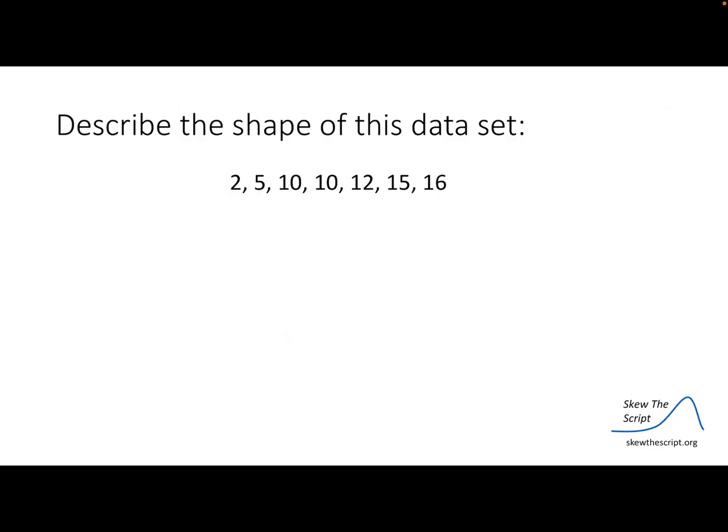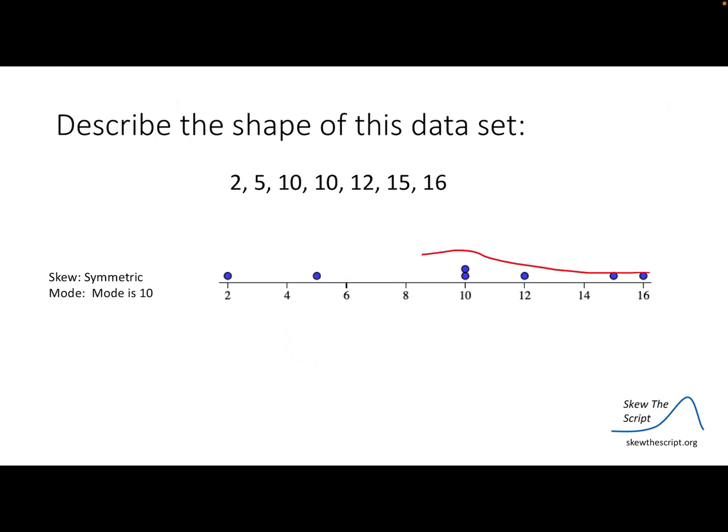Now your turn — describe the shape of this data set. It may help to put this on a dot plot. This is going to be symmetrical; it's pretty spread out about the same distance on each side. And it is unimodal, with the mode being at 10.